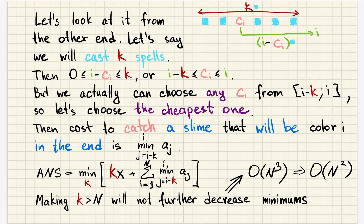Which C_i should we choose? The cheapest one — the one we can catch the fastest. So the cost to catch the slime that will become color i in the end is the minimum of costs on that segment. For fixed K, the total cost will be K times X (since each spell takes X time), plus for all colors from 1 to N the minimums on those segments. Then we minimize that over K.